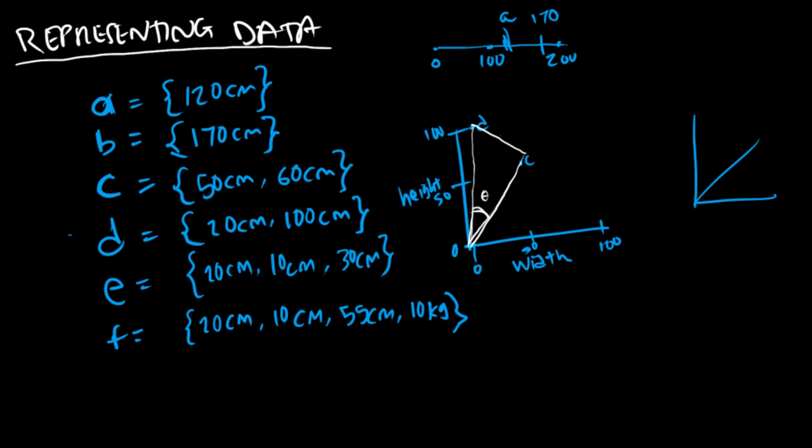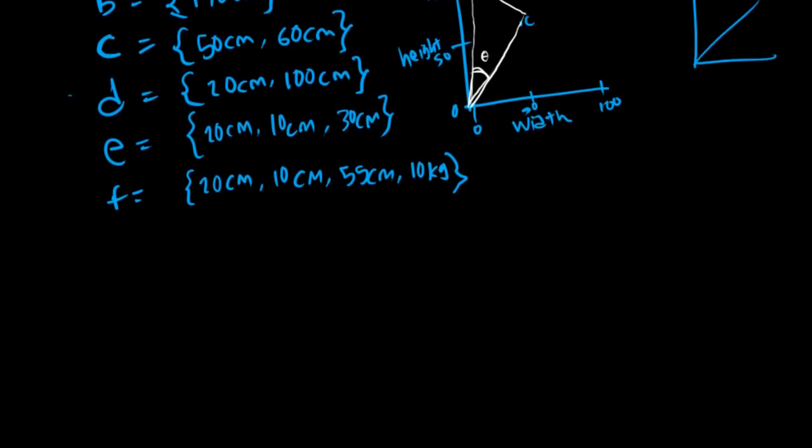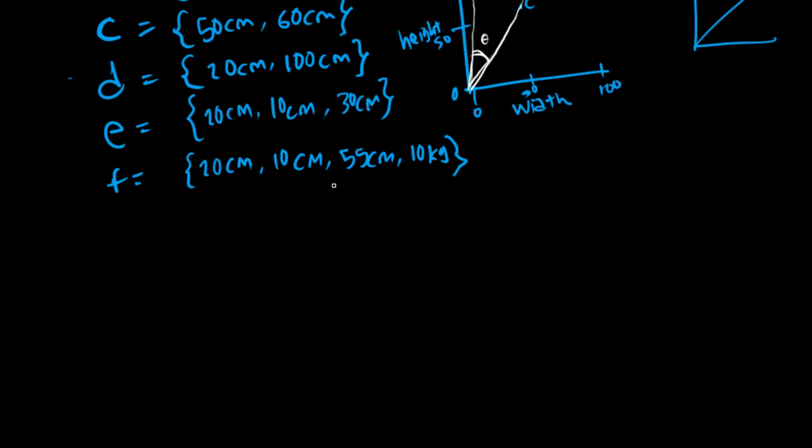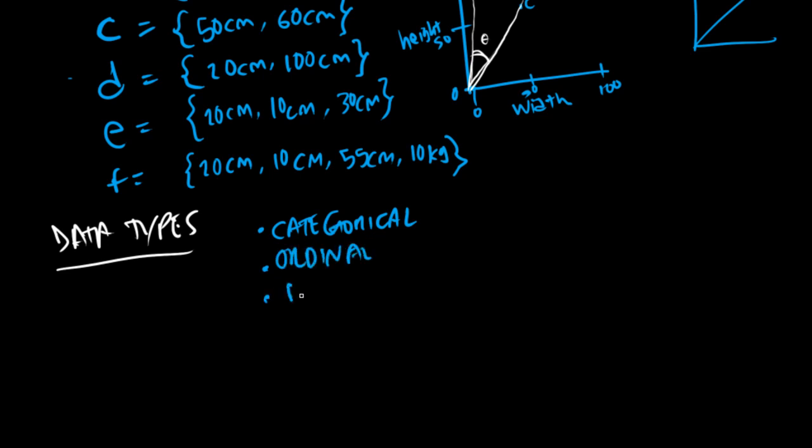The next thing I want to do is, before I move on, I want to state what are the different types of data we can represent in vectors. Let's state data types. The most common ones are categorical, ordinal, and numeric.